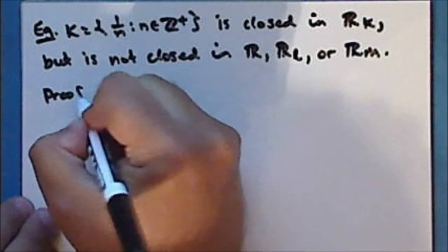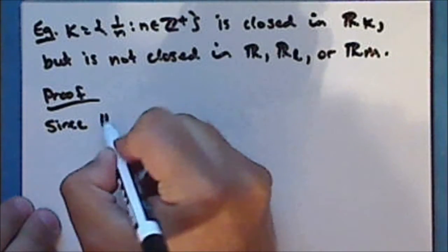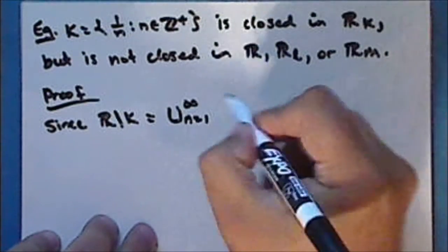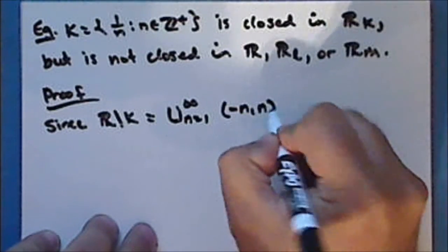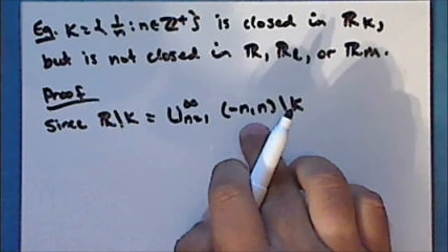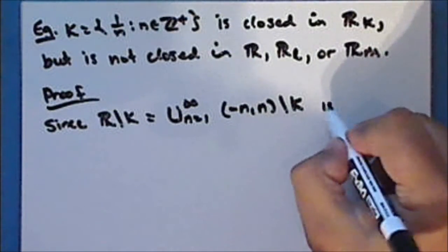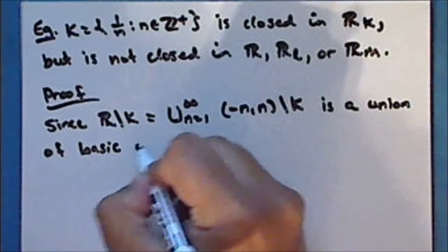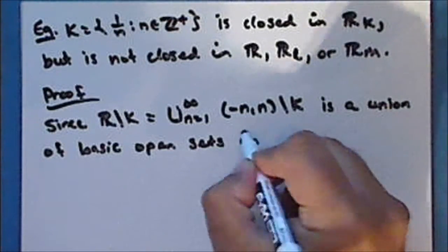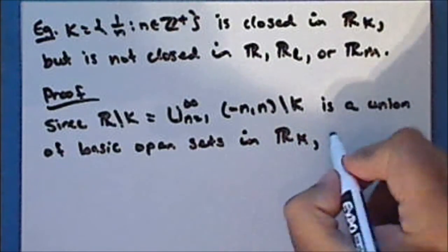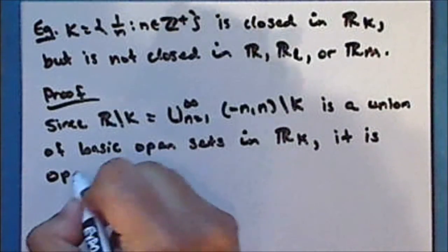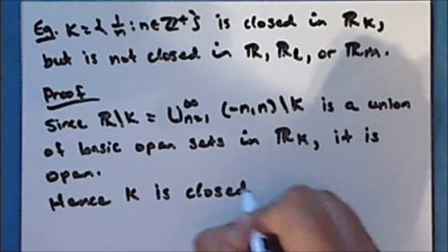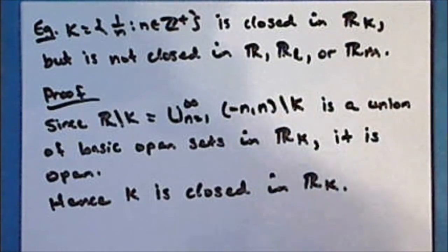Proof: Since the complement of the set K is the union from N equals 1 to positive infinity of the relative complement of the set K in the intervals of the form the open interval from negative N to N, and this is a union of basic open sets in the space of reals with the K-topology, it is open, and hence the set K is closed in the space of reals with the K-topology.